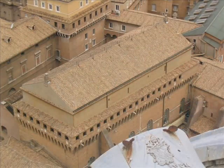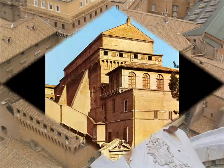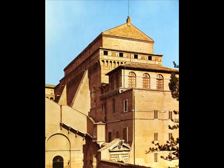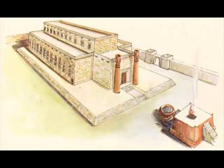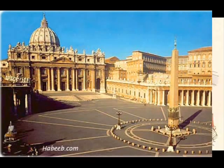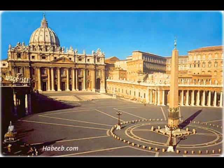The architecture of the Sistine Chapel is actually quite simple. The chapel is a rectangular structure with large sloping walls. The proportions of the Sistine Chapel mirror those of Solomon's Temple of Jerusalem, described in the Old Testament. There are also six vaulted windows on each of the two main walls, and there is a large barrel-vaulted ceiling.